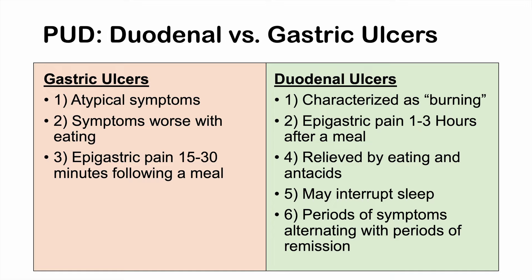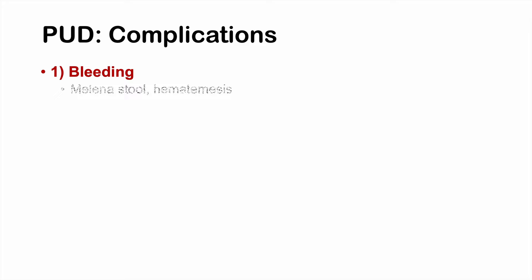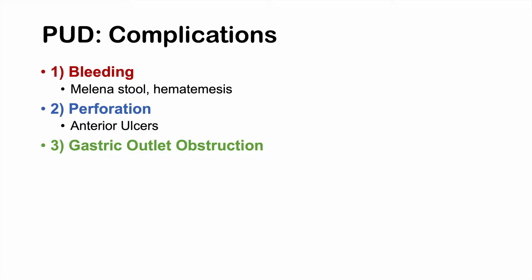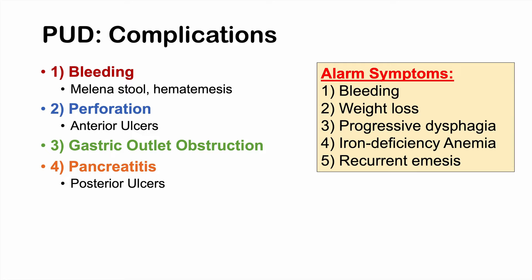Important complications of peptic ulcer disease include bleeding — leading to melena, hematemesis, or hematochezia — perforation of the ulcer, which is more likely with anterior ulcers, gastric outlet obstruction, and pancreatitis, especially with posterior ulcers that irritate the pancreas. Alarm symptoms include overt gastrointestinal bleeding, weight loss, progressive dysphagia, iron deficiency anemia due to excessive bleeding, and recurrent vomiting.